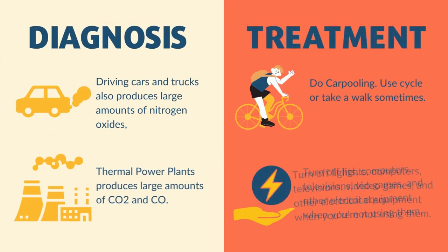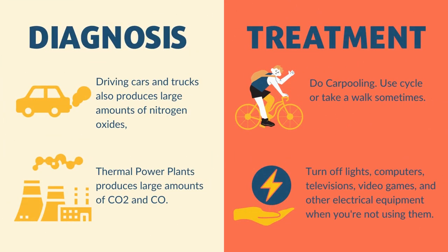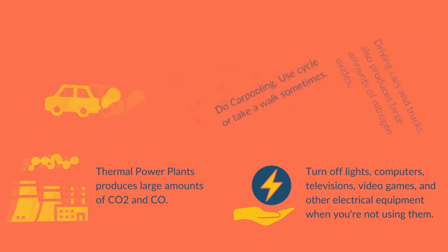Driving cars and trucks produces large amounts of nitrogen oxides, CO2 and CO. As a treatment, do carpooling, use a cycle or take a walk sometimes. Thermal power plants produce large amounts of CO2 and CO. As a treatment, turn off lights, computers, televisions, video games and other electrical equipment when you are not using them.